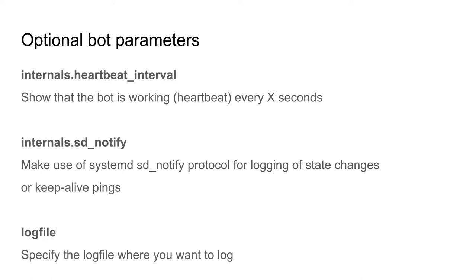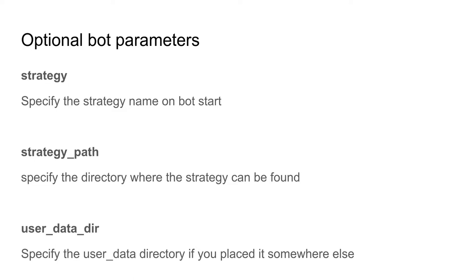In previous videos I used the strategy parameter on the command line, but you can also set the strategy in the configuration file itself. You also have to give FreqTrade the strategy path so it knows where to look for the strategy. With the user data directory option, you can specify another directory where you placed your user data. Normally this directory is within the FreqTrade bot directory structure, but if you use a directory outside the structure for security or management reasons, you can use this option to point FreqTrade to another location.